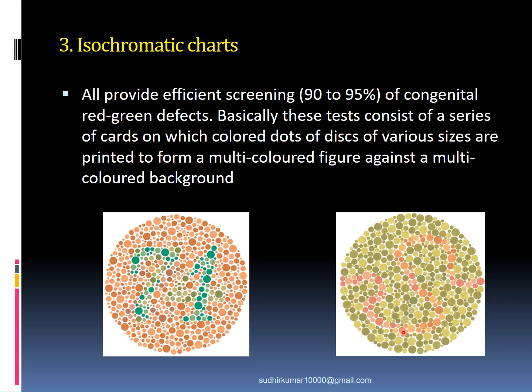The most commonly used test for color vision in the OPD is the use of isochromatic charts, which provide efficient screening of congenital red-green defects. These tests consist of a series of cards on which colored dots or discs of various sizes are printed to form a multicolored figure against a multicolored background. For example, you can see the number 74 on a multicolored reddish background, or a path of orange or reddish color on a greenish background.